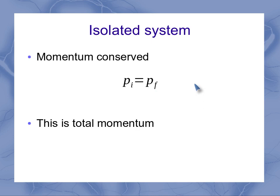And each of these are total momentums. So since we have a two-body system, that initial momentum is the initial momentum of object one plus the initial momentum of object two. And our final momentum is again object one and object two added together.